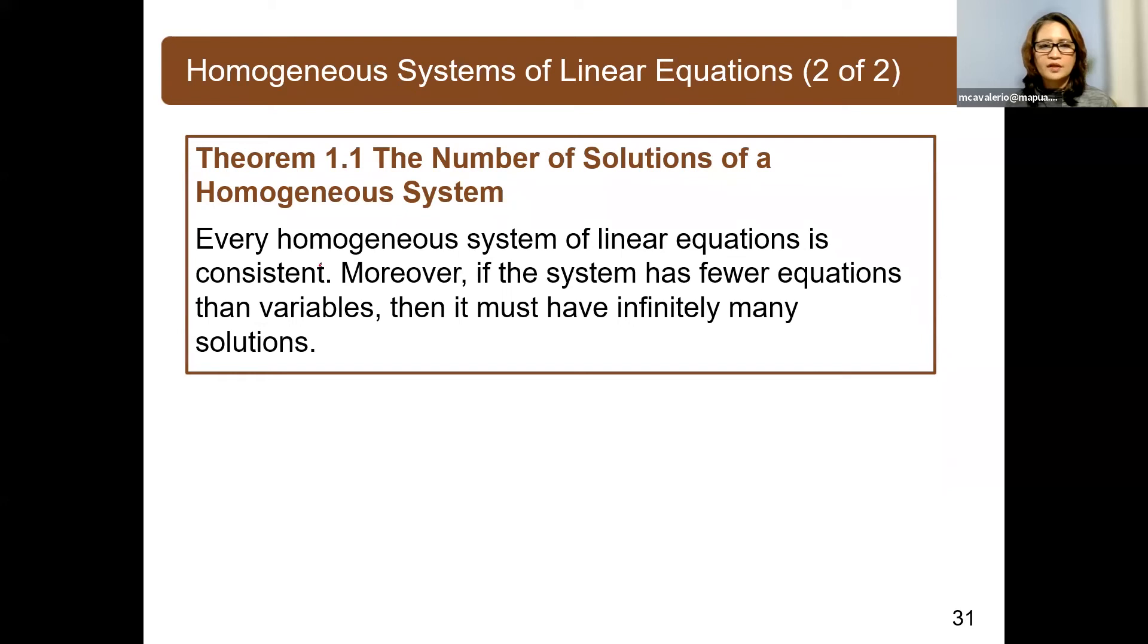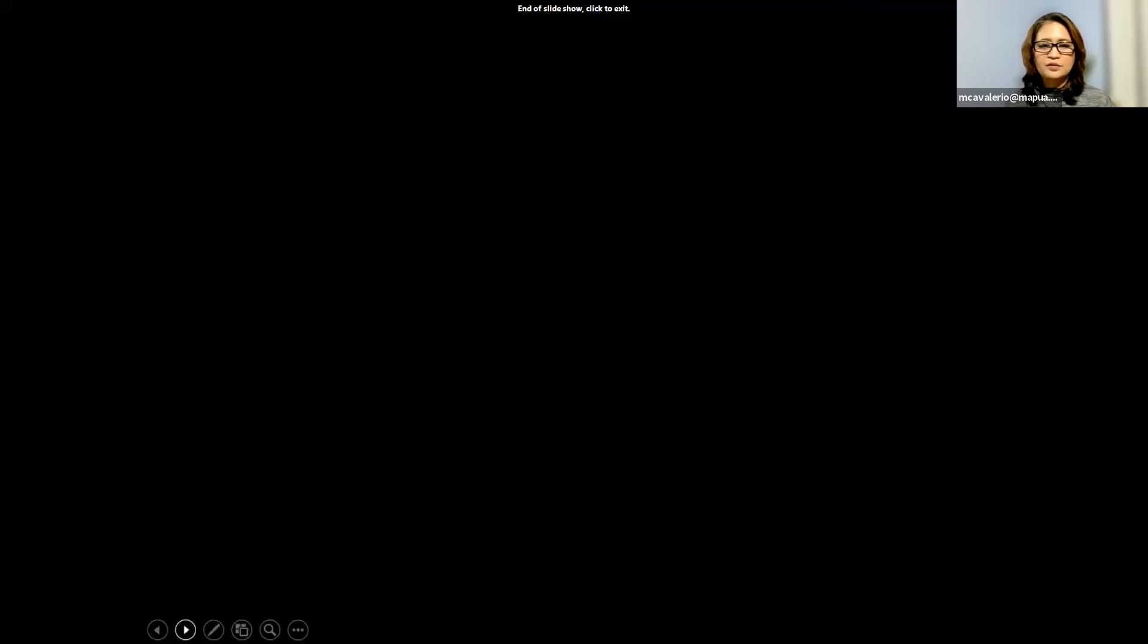So for theorem 1.1, which is about homogeneous systems of linear equations, the number of solutions of a homogeneous system: Every homogeneous system of linear equations is consistent. Moreover, if the system has fewer equations than variables like what we did earlier, then it must have infinitely many solutions.